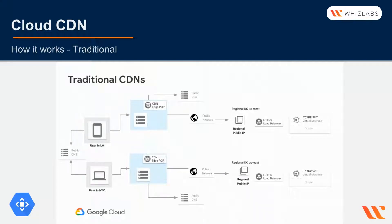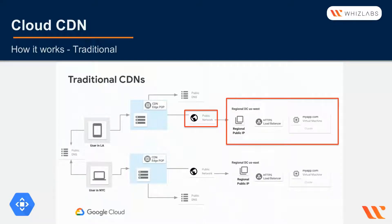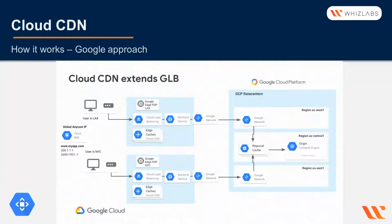In a traditional CDN setup, a regional data center with a public IP is exposed to the internet, which is looked up by DNS or IP by a CDN configuration. This has a lot of hops and is fairly complex because the CDN is a separate system that needs to be updated. With Google, the load balancers sit right on the edge. The global anycast IP address can check for the best route across the global control plane to the origin server. Cloud CDN works in parallel with the load balancers on the edge.